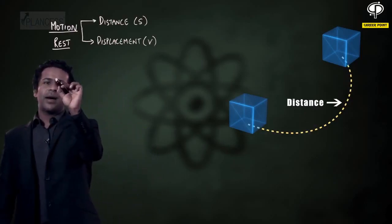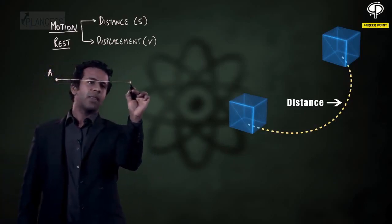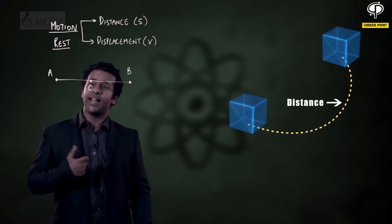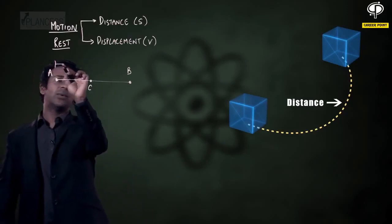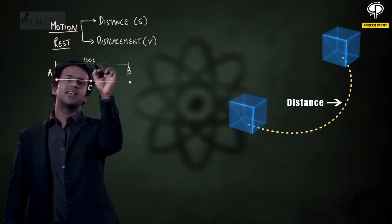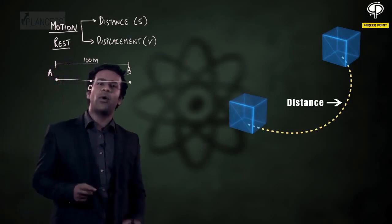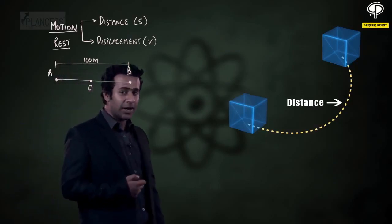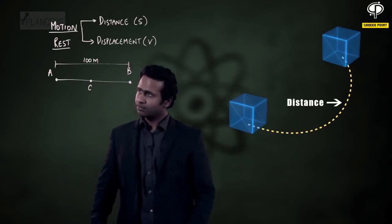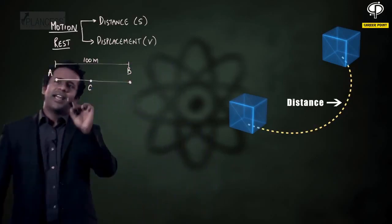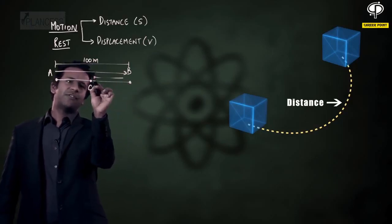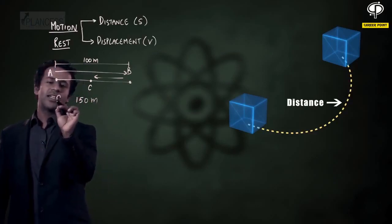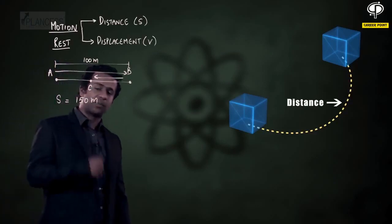So, if a particle moves from point A, goes to point B, and then moves back to point C, and the distance between A and B is 100 meters, and C is the midpoint of AB, then the distance covered by this particle is 100 meters plus 50 meters, which is 150 meters. This is the distance covered by this particle.